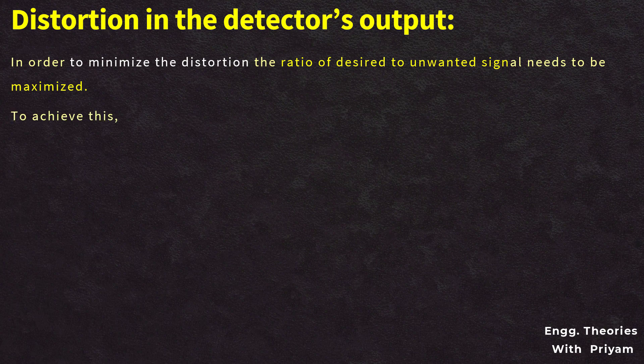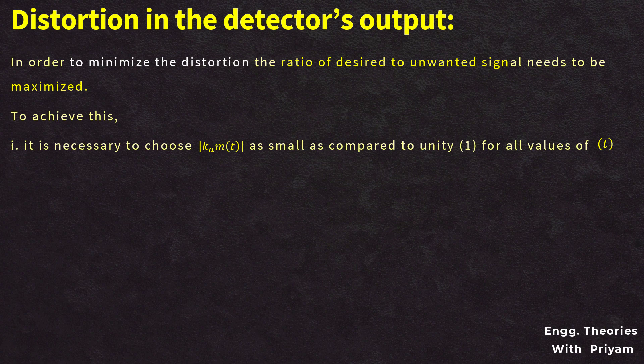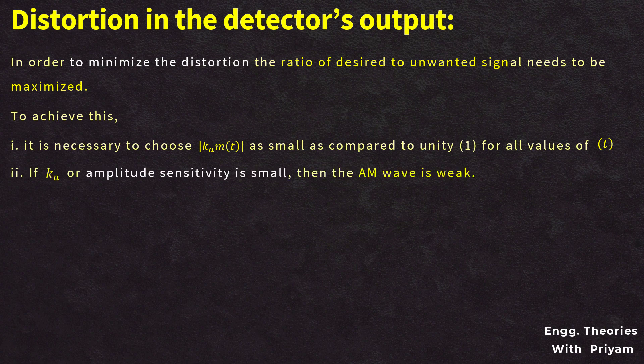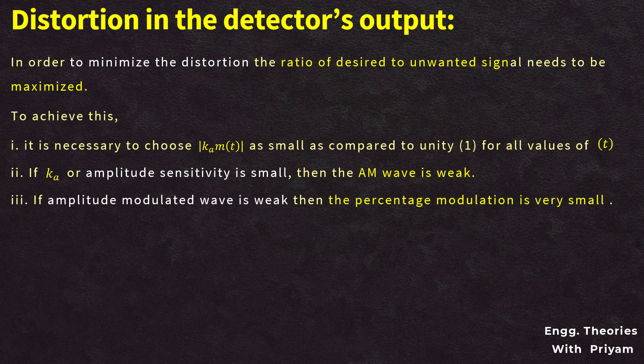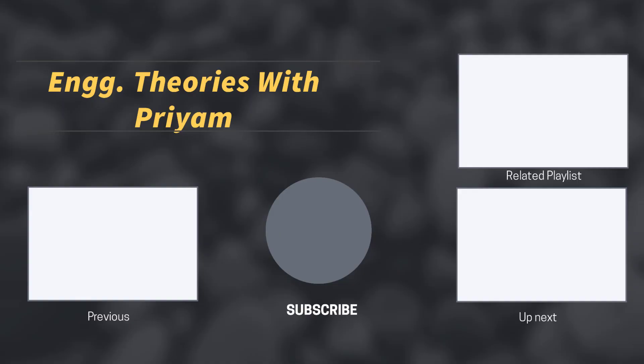In order to minimize distortion, this ratio needs to be maximized. To achieve this, it is necessary to choose Ka·m(T) to be as small as compared to unity for all values of T. If Ka is small, then the amplitude modulated signal is weak, and the percentage modulation is also very small. This means the distortion in the detector's output is low if and only if the applied amplitude modulation is weak and the percentage of modulation is very small. That's all for this lecture.